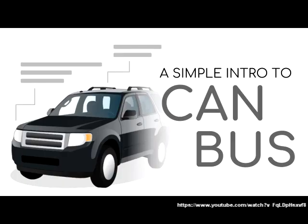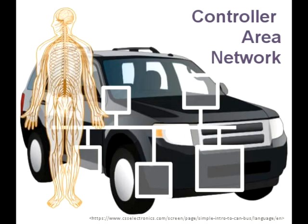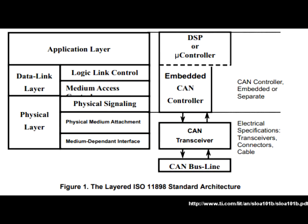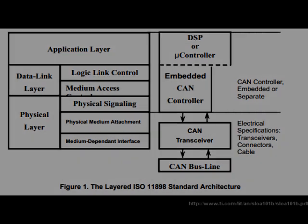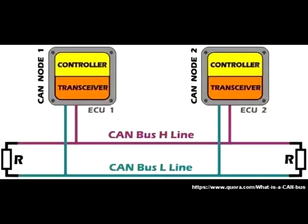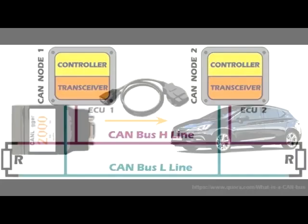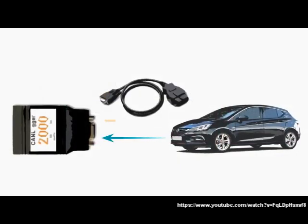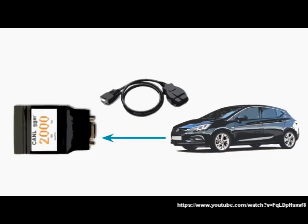We will consider the Controller Area Network. CAN bus is a communication protocol designed for cars or vehicles. The CAN communication uses two signal pairs: CAN-H and CAN-L. Between the signals of CAN-H and CAN-L, there must be a resistance of approximately 120 to 240 ohms.